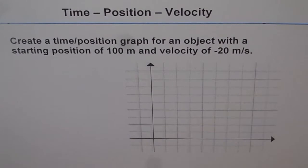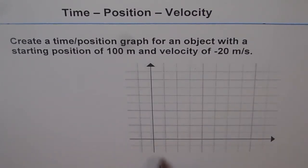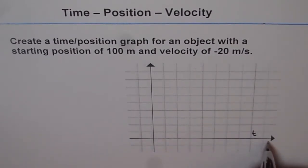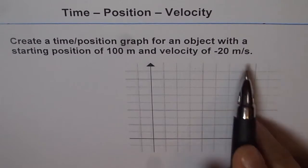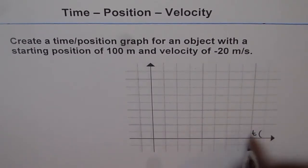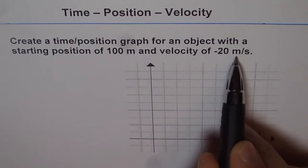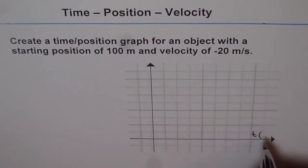So 100 meters is the starting position and for every second, distance decreases by 20 meters. So in our time position graph, we will take time along the horizontal axis and the units for time will be seconds. Since the velocity is given in meters per second, meters becomes the unit for distance and for time, it is seconds.